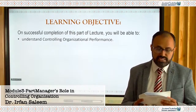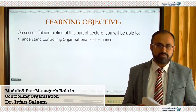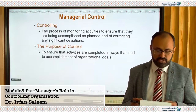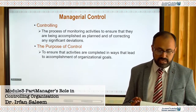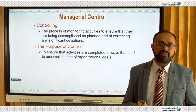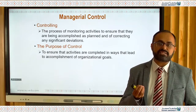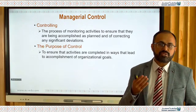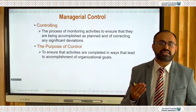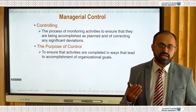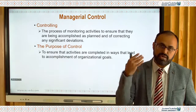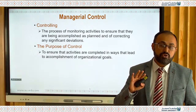Our key objective is to understand the controlling of organizational performance at three different levels. Managerial control is the process of monitoring activities to ensure they are being accomplished as planned, and correcting any significant deviation. For example, if you are targeting that Bank Muscat will generate ten thousand Omani Rials as revenue this month and you achieve it without deviation, this means you have controlled and planned it well.